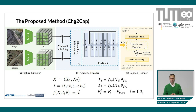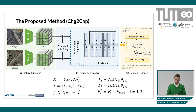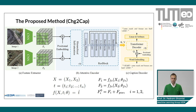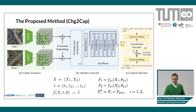Here you can see the proposed method, CHG2CAP (Change to Caption). The proposed method is composed of three parts: the feature extractor, the attentive encoder, and the caption decoder. We take multi-temporal images — image one and image two — and pass them through pre-trained CNN-based networks like ResNet-101 to produce extracted features. We then add positional embedding and pass through the attentive encoder, which is composed of N blocks of hierarchical self-attention and one residual block, producing the image embedding used together with the text token to produce the change captions.